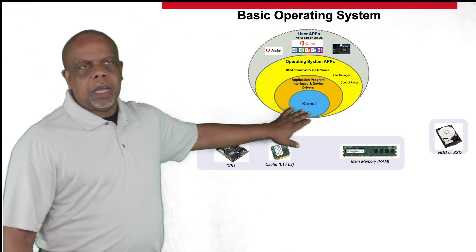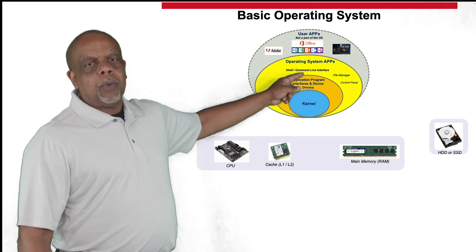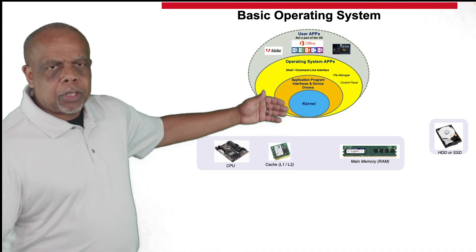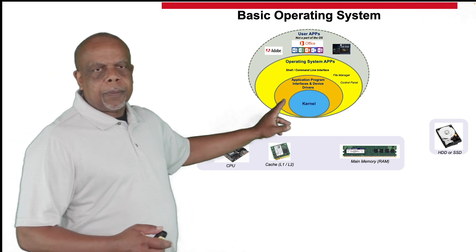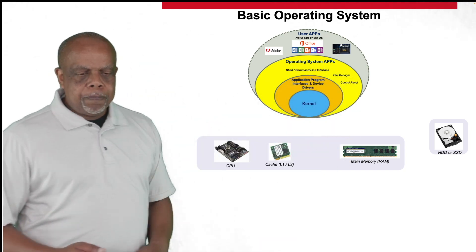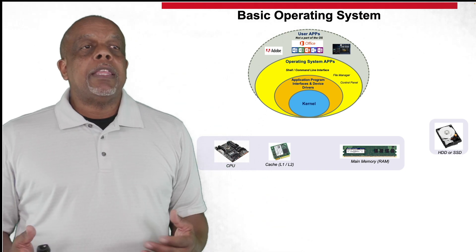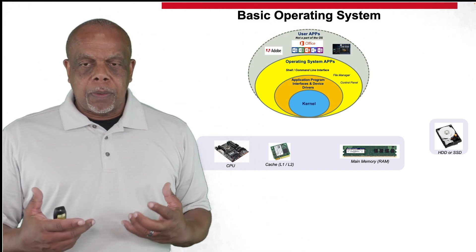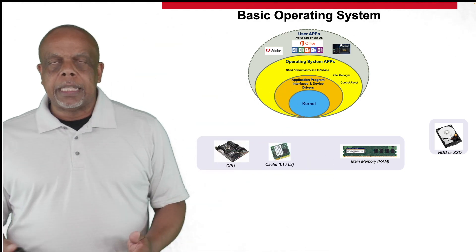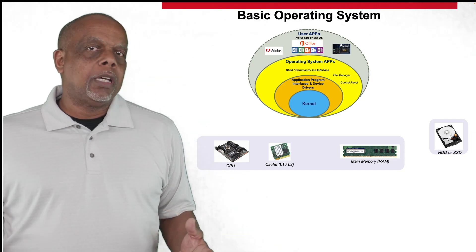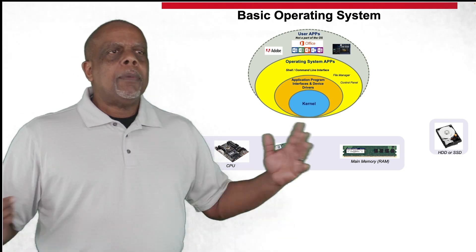On top of the kernel, we have application program interfaces — APIs — and device drivers. These allow us to talk to the kernel when needed, and that's typically done through some type of shell. In Windows, we use PowerShell — that's how a power user can interface with the kernel. In Linux, we have different types of shells: Bash, the Bourne shell, Bash being 'Bourne Again Shell.' There are different types of shells.